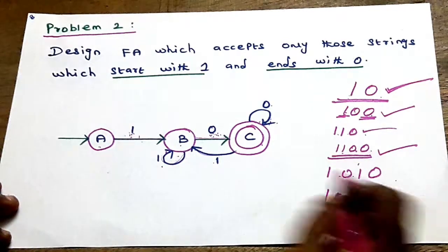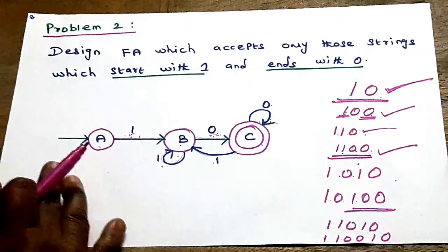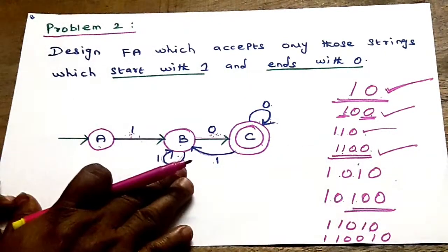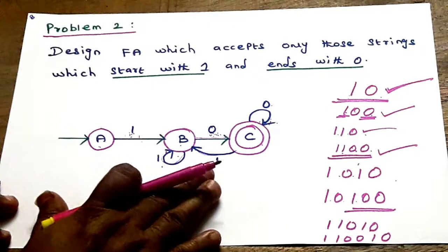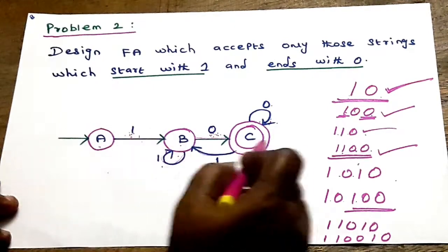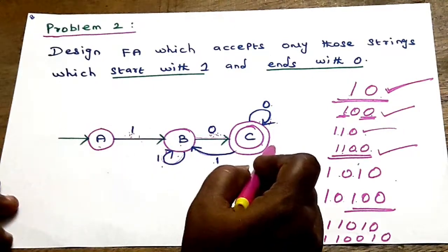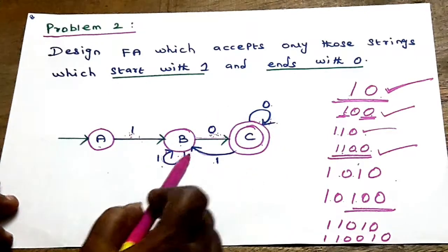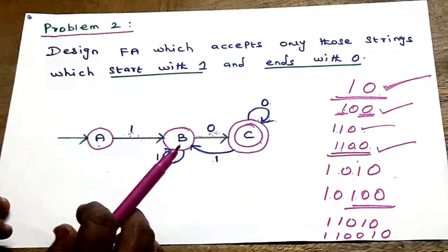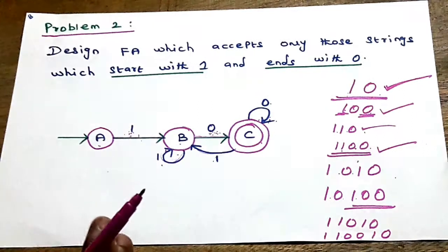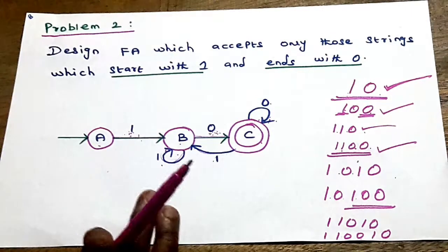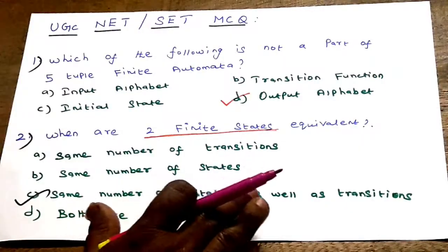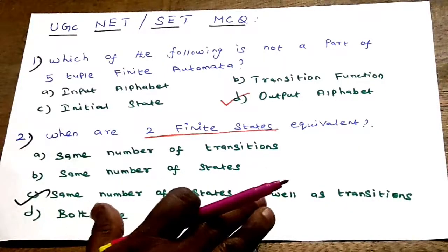Self-loop is 0. How many inputs are set in the transition diagram? One condition: starting with 1 and ending with 0. The self-loop is in the loop — that is the numbers. This is very important for the UGC Net Exam. Next: UGC Net Set Exam.